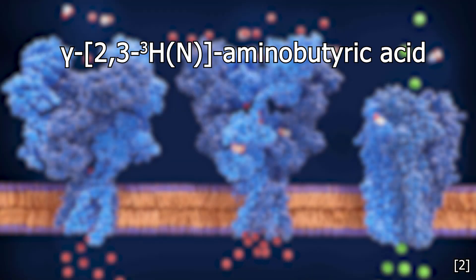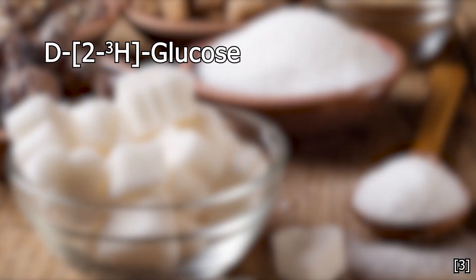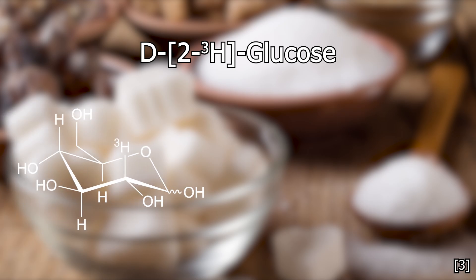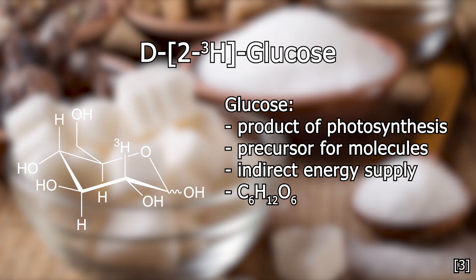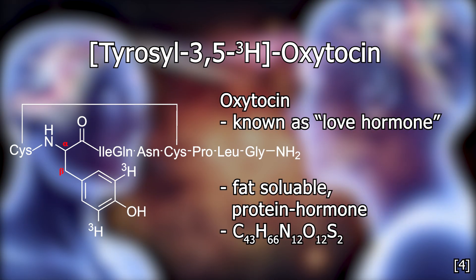For example, here is tritium-labeled GABA, which is gamma-aminobutyric acid, an important neurotransmitter. There is also tritium-labeled D-glucose with tritium at the second carbon position, or we have tritium-labeled oxytocin. The three and five refers to the third and fifth carbon atoms. And if I counted correctly, the tritium should be there.